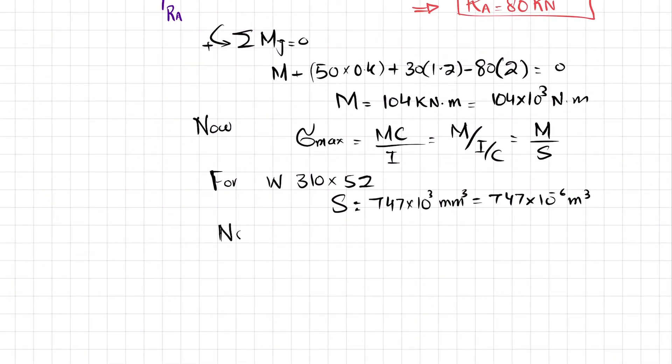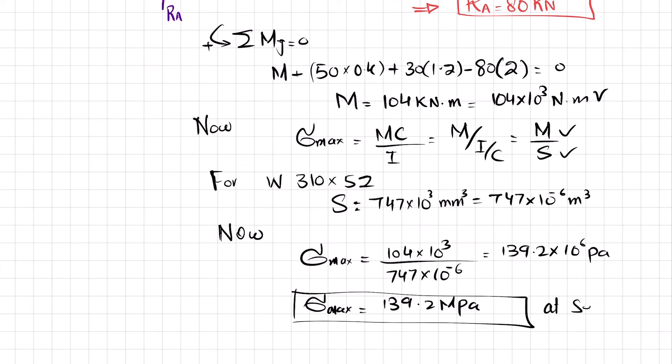Now you can put, you have this value moment and you have section modulus. You can put maximum stress equals 104 × 10³ divided by section modulus, which is 747 × 10⁻⁶. When you calculate it, it will be 139.2 × 10⁶ Pascals, or you can say that maximum stress equals 139.2 megapascals at section AA.